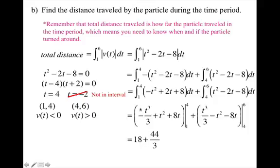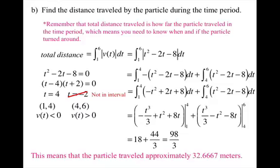And I didn't write all of that work out, but when you do that, for the first piece, the negative velocity, you get 18. For the second piece, you get 44 over 3. So that means that my total distance traveled is 98 over 3, and that would be approximately 32.6 repeating meters.